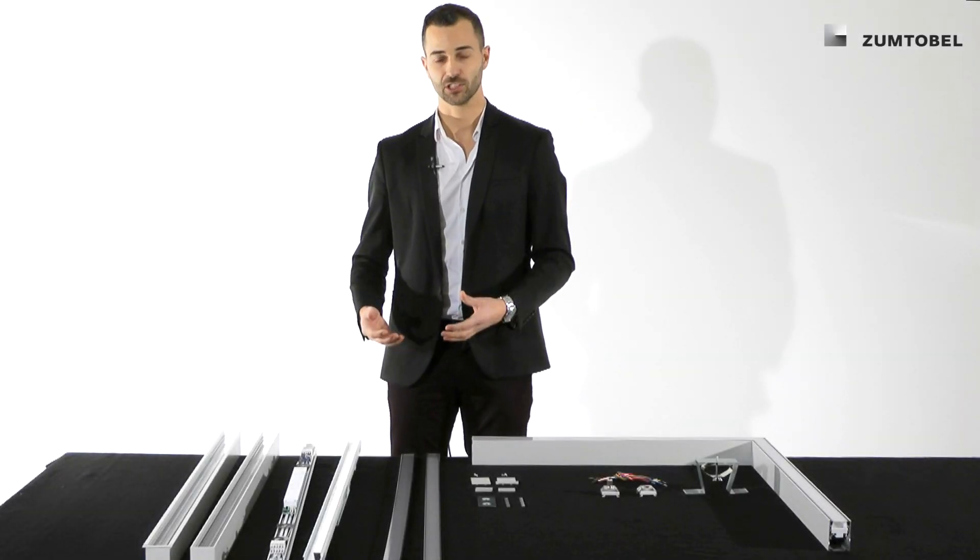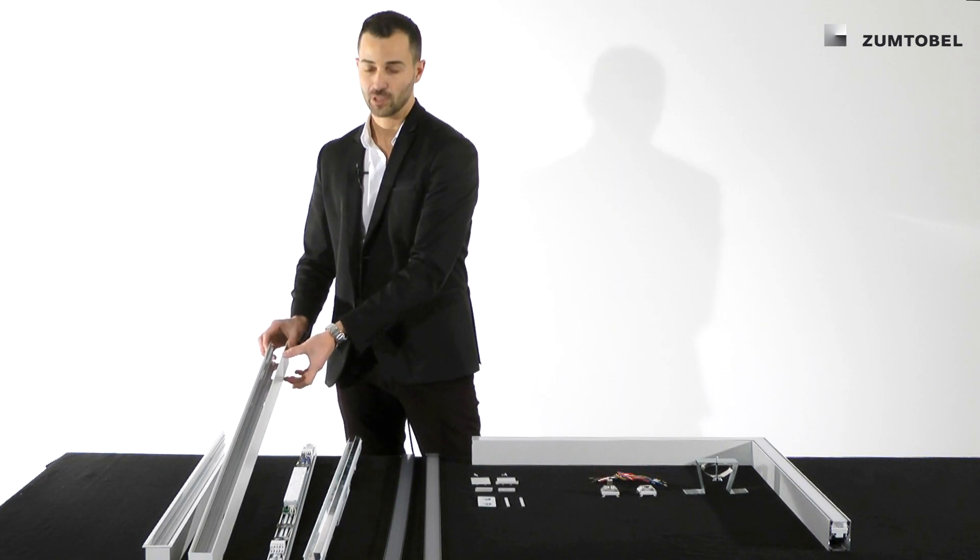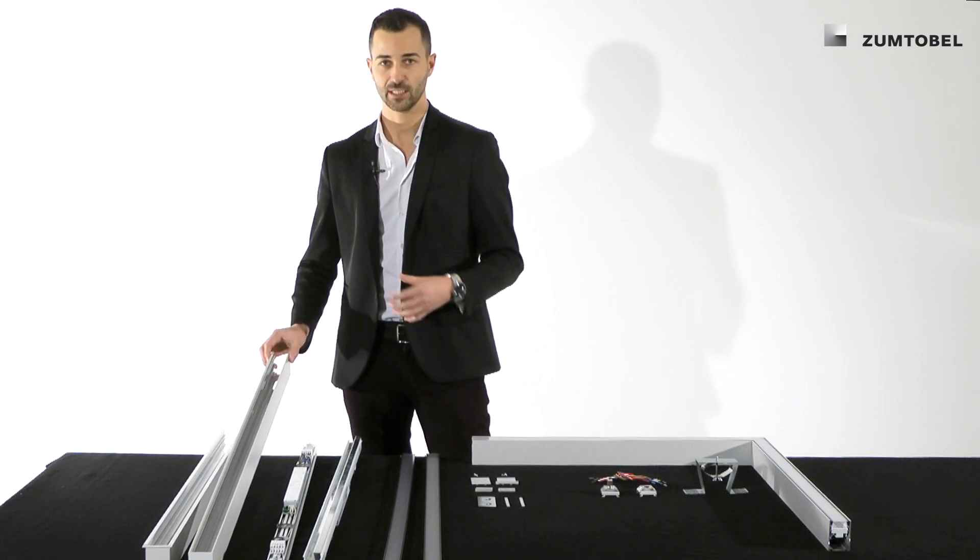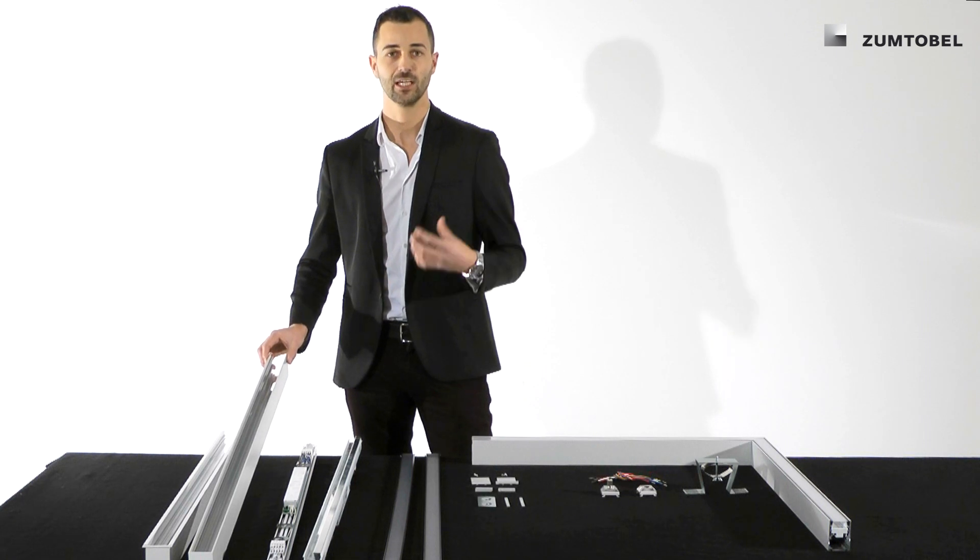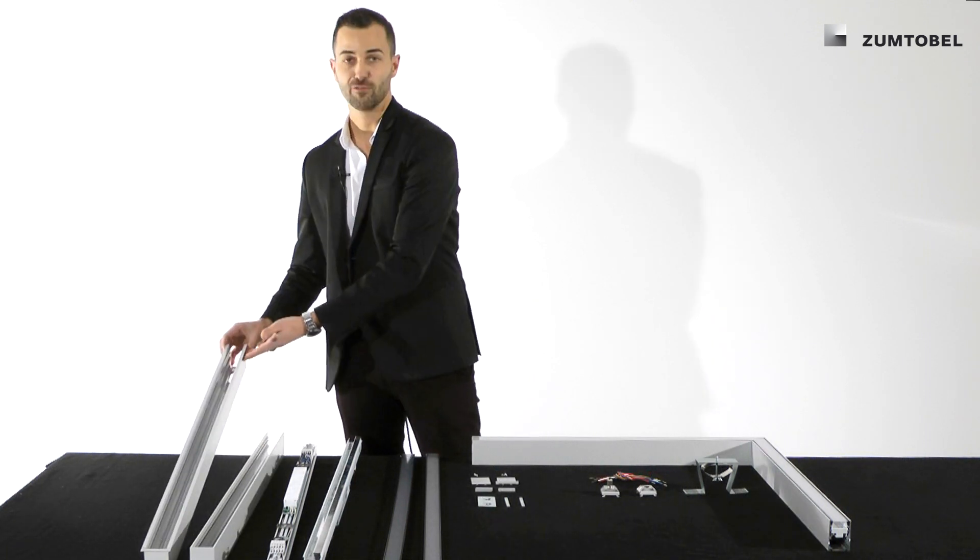Let's start with Slotlight Infinity Slim. It's the perfect design-oriented extension with only 45mm in width and only 64mm in design height. It's the perfect design-oriented light line. It comes in a frameless and also in a frame version.